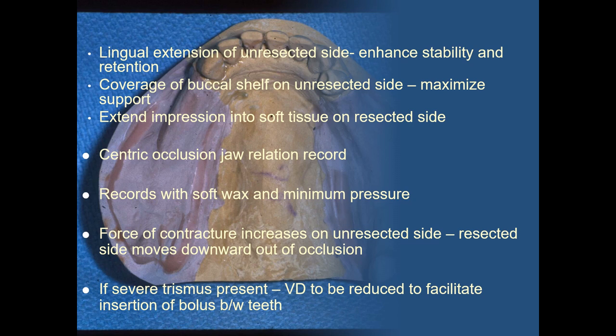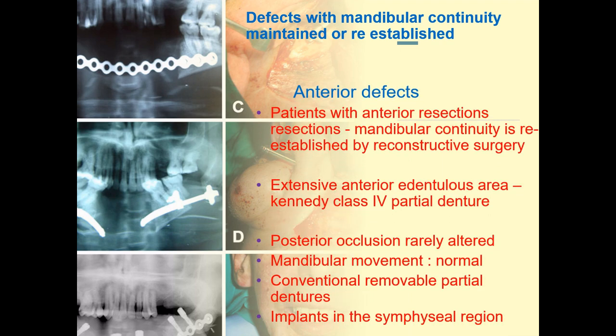This is how a conventional removable partial denture is fabricated for a hemimandiblectomy patient. If severe trismus is present, the vertical dimension can be reduced to facilitate insertion of a bolus between the teeth. For anterior defects, which include patients with anterior resection where mandibular continuity has been reestablished by reconstructive surgery, there is an extensive anterior edentulous area forming a Kennedy Class IV partial denture situation. In such cases, posterior occlusion is rarely altered and mandibular movement is usually normal, though occlusal abnormalities may occur due to graft contracture or inaccurate positioning of mandibular fragments.